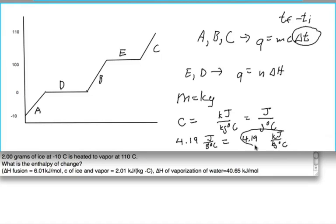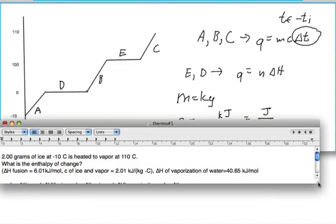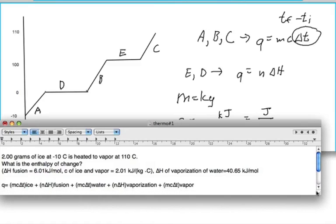As you can see below, I set up the equation where q equals the m c delta t of ice, because ice goes from minus 10 to 0 degrees, plus n delta H of fusion of the ice as it's converted to water at point D.